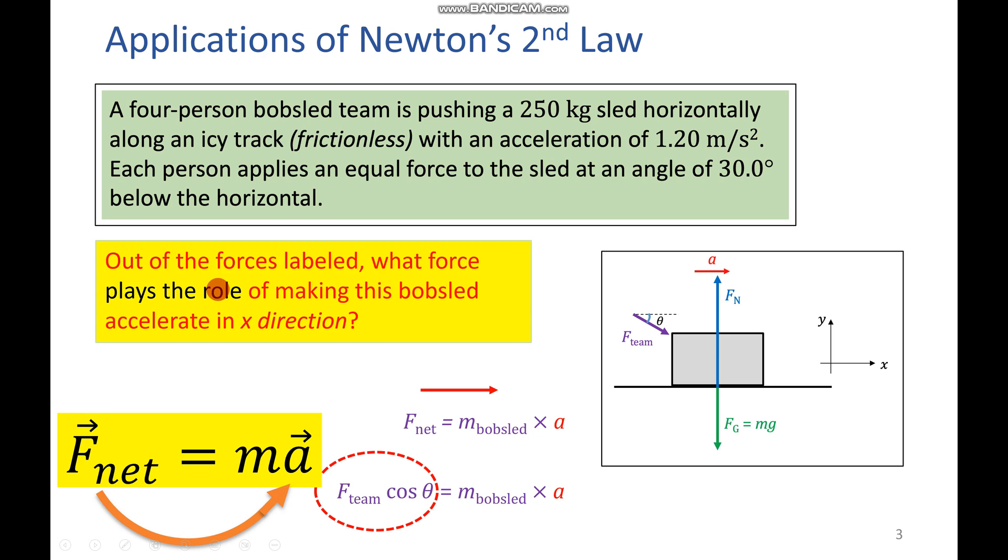And we have this question out of the forces labeled, what force plays the role of making the bobsled accelerate in the x direction? And using our Newton's second law equation right here and looking at our diagram here, we can see the force of the team, which is this right here, times the cosine theta. Our x component is going to be equal to our m times a.